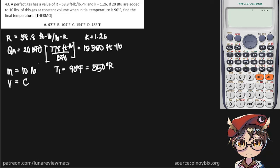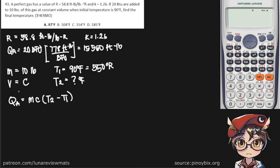We are asked to find the final temperature in Fahrenheit. We know that the heat added equation is Q equals mass times the specific heat constant times the temperature difference. Since this is a constant volume process, our specific heat would be Cv, the specific heat at constant volume.